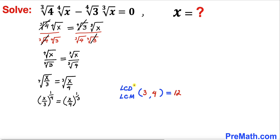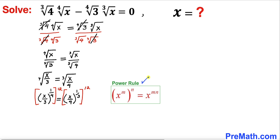Now let's focus on the indices 3 and 4. The least common multiple of 3 and 4 is 12, so we take both sides to the power of 12. Applying the power rule of exponents, we multiply the exponents: 1/4 times 12 gives power 3 on the left, and 1/3 times 12 gives power 4 on the right.